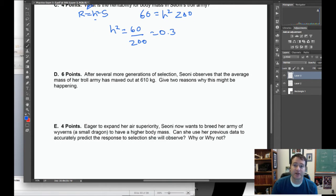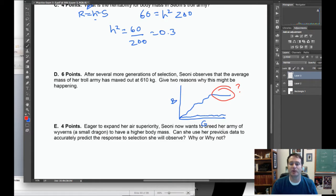After several more generations, Sione observes the average mass of her troll army has maxed out at 610 kilograms. Give two reasons why this might be happening. This is based on the slide in the notes pertaining to drosophila bristle number. This is drosophila bristle number and generations, a cartoon version of data from a selection experiment. Here's the control line, but if we select for lots of bristles it looks like this and then it does this. I think I circled this in red and we were like, why aren't we making them more hairy?